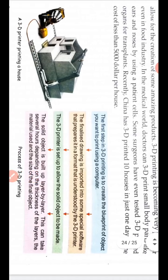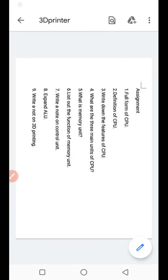The steps for the process of 3D printing: Step 1 — create the blueprint of the object you want to print using a computer. Step 2 — the finalized drawing is imported into special software that prepares it in a format understood by the 3D printer. Step 3 — the 3D printer is set up to allow solid objects to be made. Step 4 — the solid object is built up layer by layer, which can take several hours depending on thickness of layers, material used, and size of the final object. Let us see how a 3D printer works.